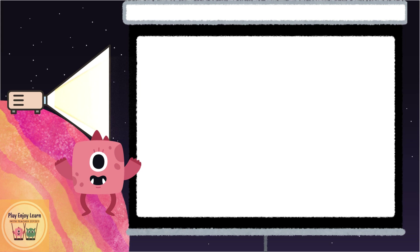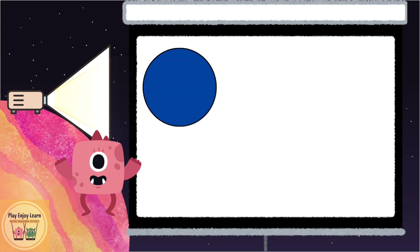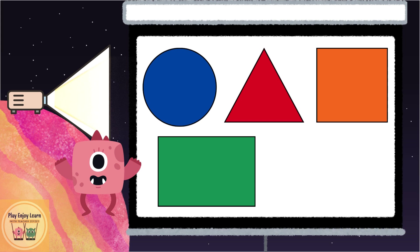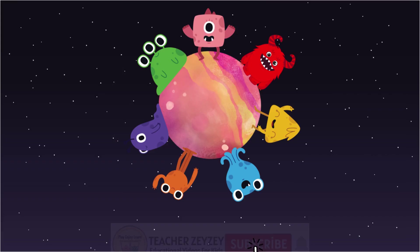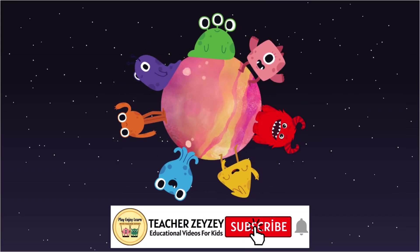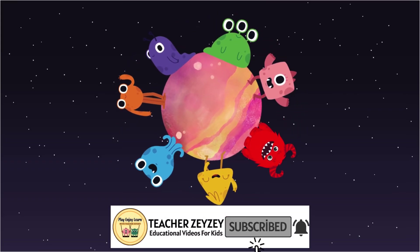Let's say together: Circle. Triangle. Square. Rectangle. Oval. Congratulations kids! See you in the next video!